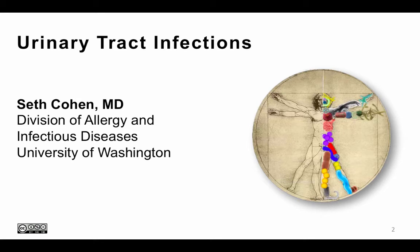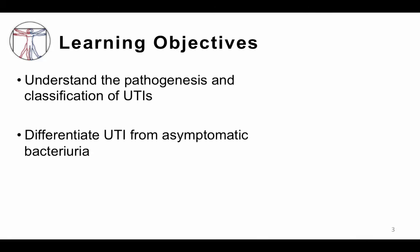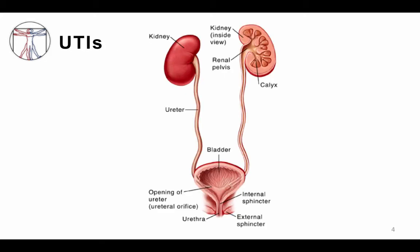Hi, this is Seth Cohen from the Division of Allergy and Infectious Diseases at the University of Washington, and we're going to be talking about urinary tract infections. The learning objectives include understanding the pathogenesis and classification of UTIs, differentiating UTIs from asymptomatic bacteriuria, and describing first-line treatment options for UTIs.